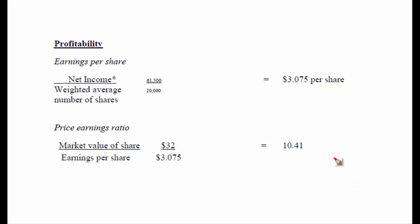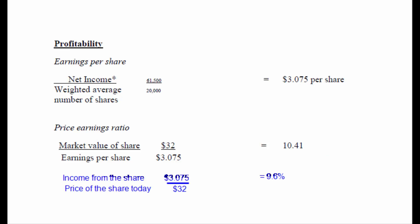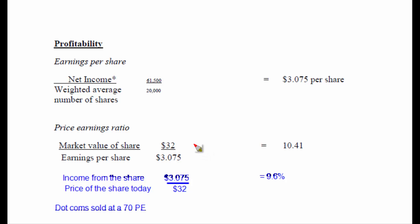To completely understand the price earnings ratio and how it is used, what I like to do is turn the calculation upside down. If I turn the price earnings ratio upside down, I can see that the shares earn income of $3.075 and you can buy one today for $32. So when people buy the shares today, they are buying them at a price that will earn them a 9.6% return on their investment.